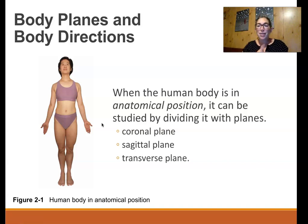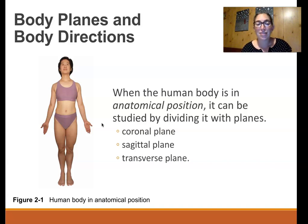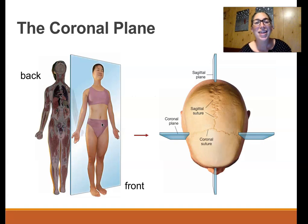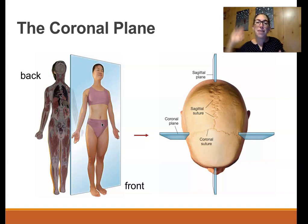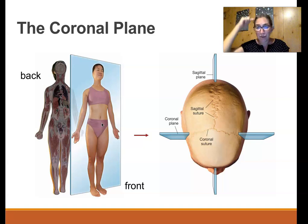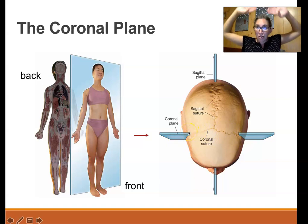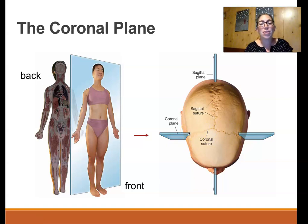We can divide the body into different segments using different planes — basically like a giant blade cutting the body in a certain plane. The coronal plane is the first one. Imagine a giant blade that cuts the body down through the ears, cutting it into a front and back half. It's named after the coronal suture, which is a suture line where bones fuse in the skull. If you imagine a plane going through that coronal suture, that forms the coronal plane.